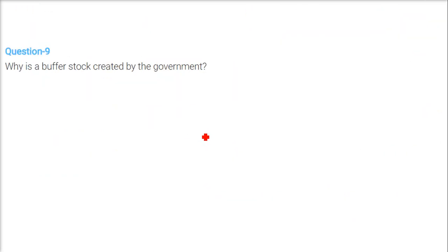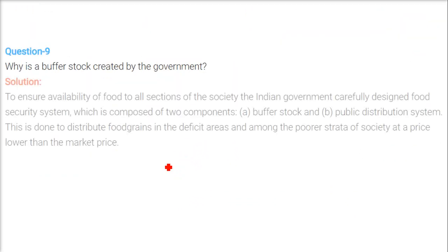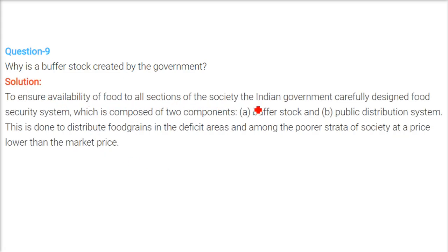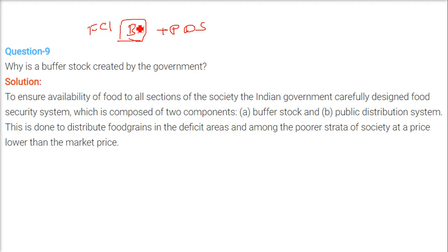Why is buffer stock created by the government? To ensure food availability to all sections of society, the government carefully designed a food security system consisting of buffer stock and the Public Distribution System. The FCI procures food grains from farmers at MSP, builds a buffer stock, and distributes food grains through PDS to deficit areas among the poor at a price considerably lower than the market price.